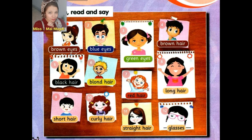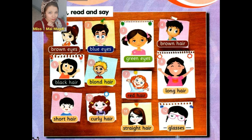Okay, let's go through them one more time. Number one: Brown eyes. Number two: Blue eyes. Number three: Green eyes. Number four: Brown hair. Number five: Black hair. Number six: Blonde hair. Number seven: Red hair. Number eight: Long hair. Number nine: Short hair. Number ten: Curly hair. Number eleven: Straight hair. Number twelve: Glasses. Excellent! Bravo عليكم، شاطرين جداً!